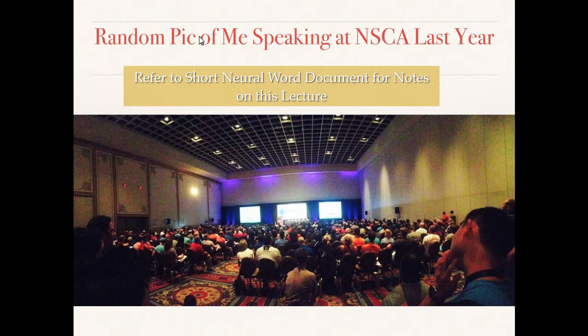We have an upper motor neuron. That motor neuron in the spinal cord must be a lower motor neuron. That motor neuron is innervating or controlling as many as a few — say three — muscle fibers, to as many as over a hundred. A lower motor neuron and all of the muscle fibers that it innervates is known as a motor unit.